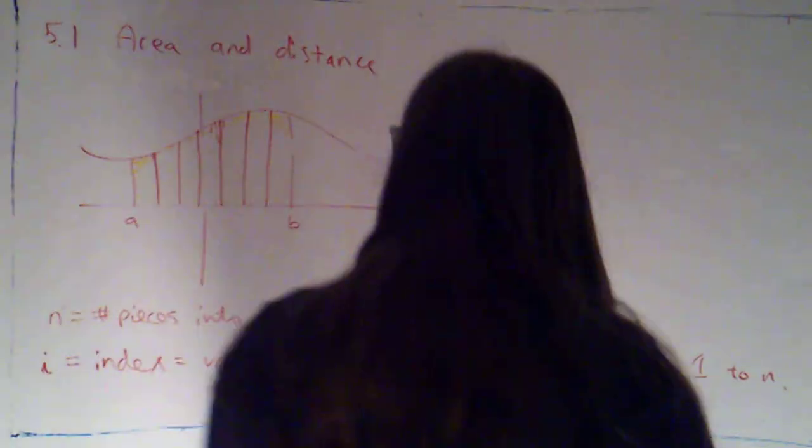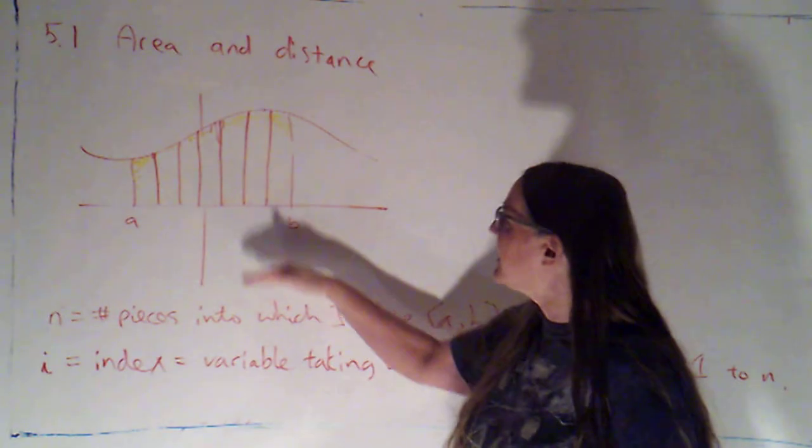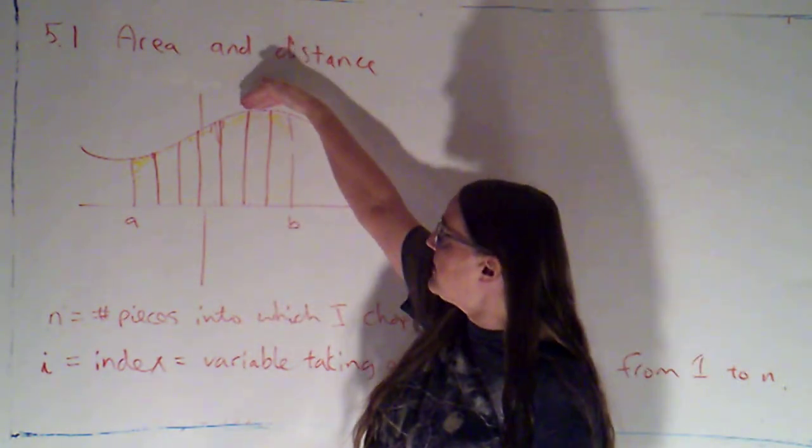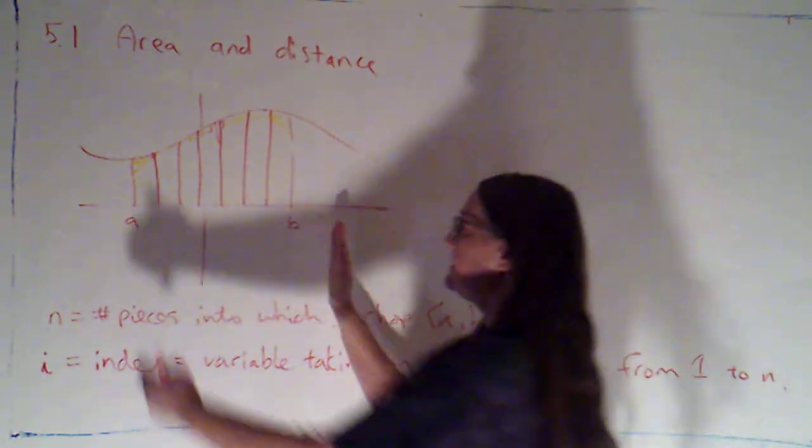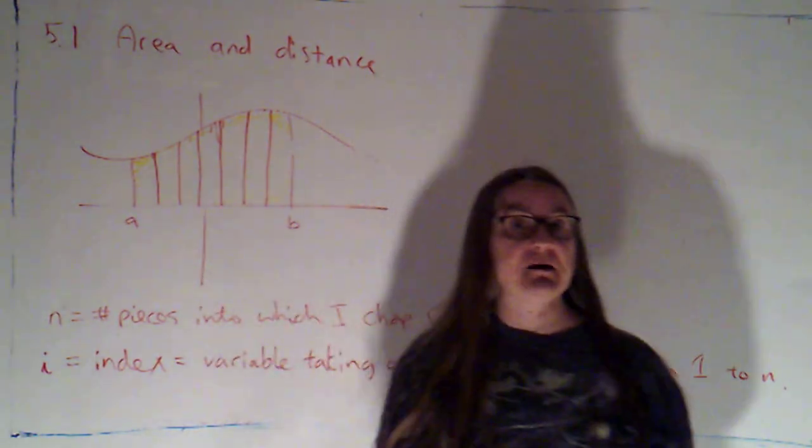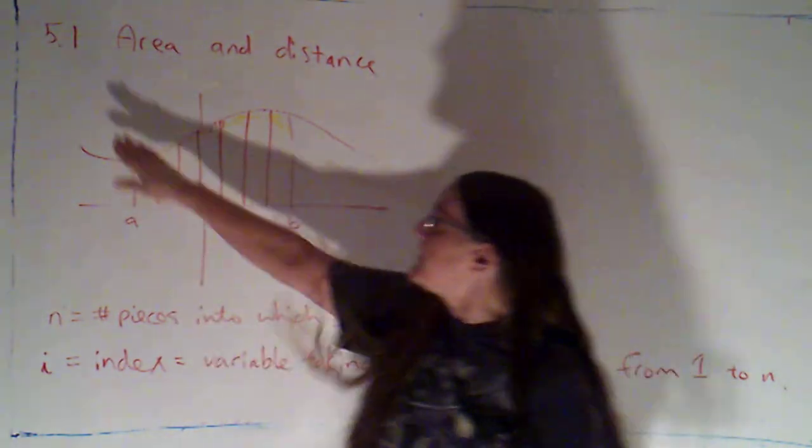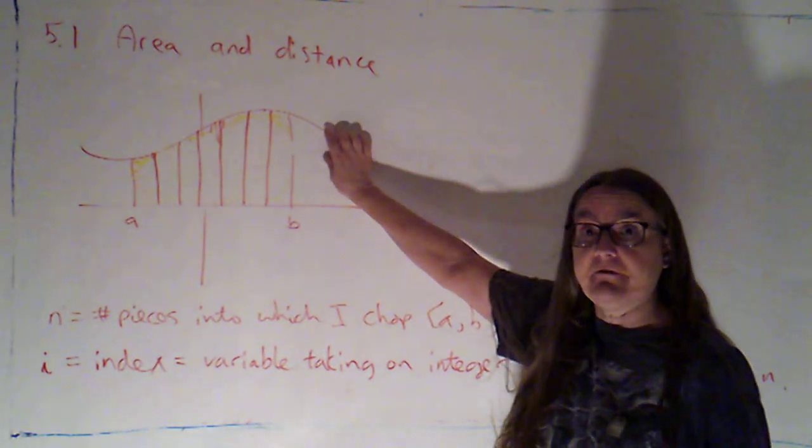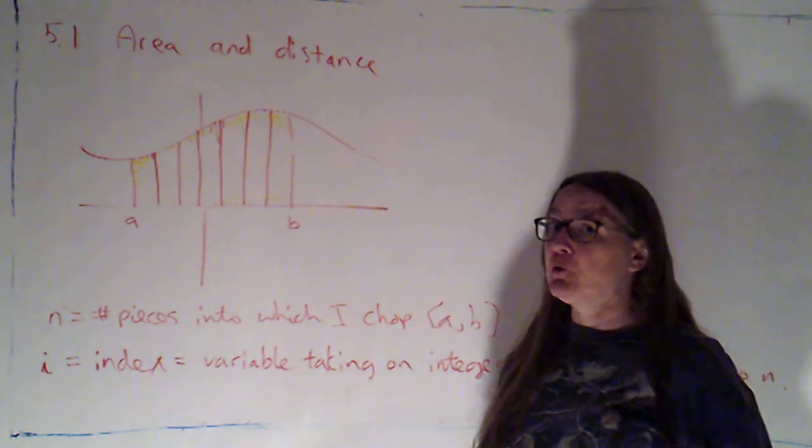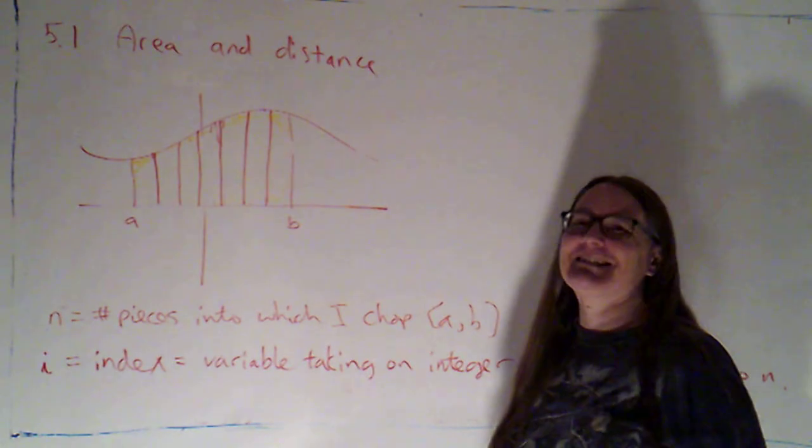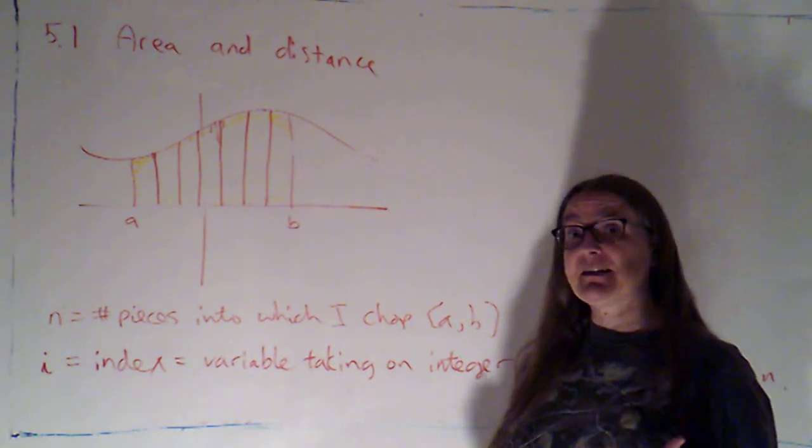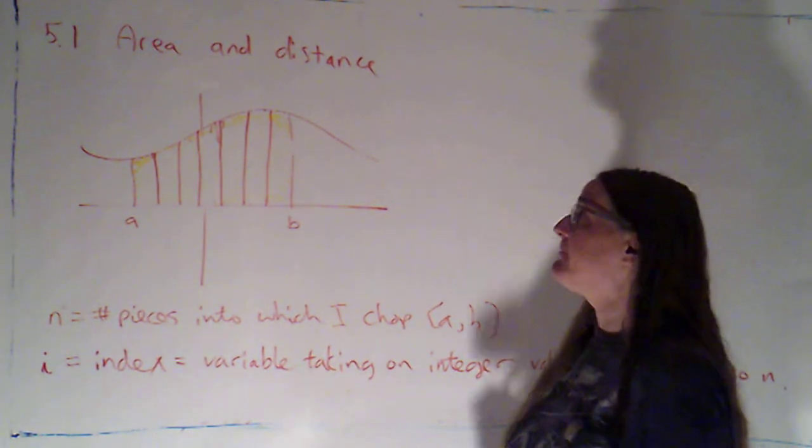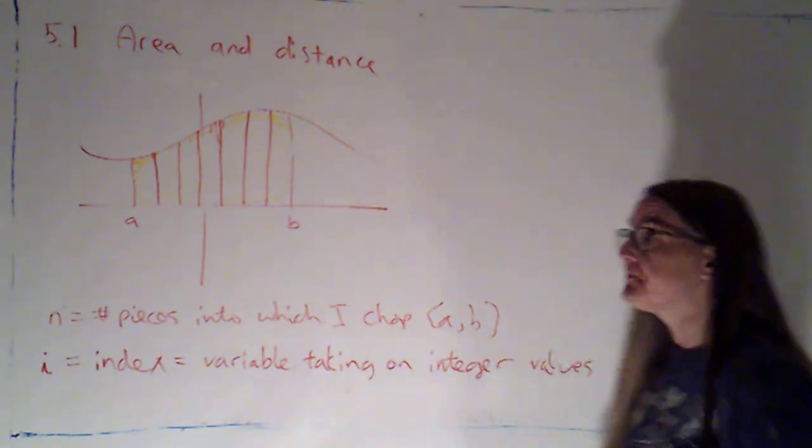Okay, we are continuing our quest to find this area between the function f of x and the x-axis over the interval from a to b. Just a reminder, for this section, we're requiring that our function f of x be non-negative. I mention that just because that rule's going to change when we get to section 5.2, but we're going to have to adjust to see how we deal with having a function that takes on negative values.